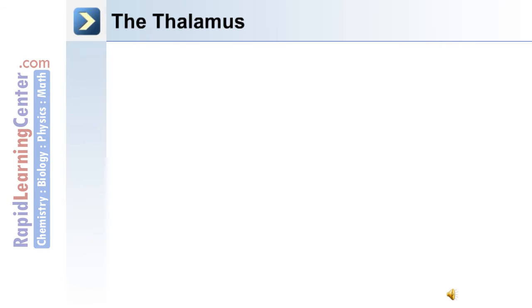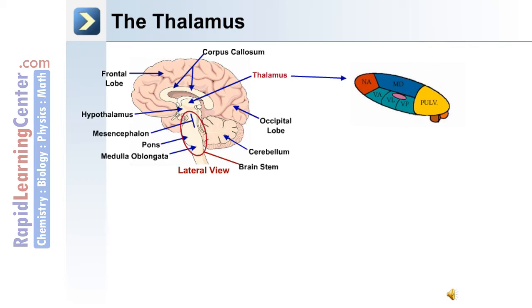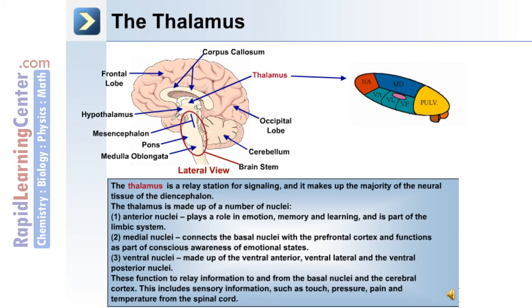The thalamus is located in the midline, superior diencephalon, and serves as a relay station for signaling. It makes up the majority of the neural tissue of the diencephalon and is made up of a number of nuclei. The anterior nuclei play a role in emotion, memory, and learning, and are part of the limbic system.